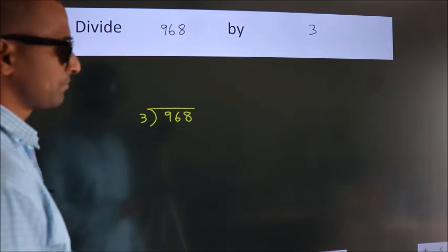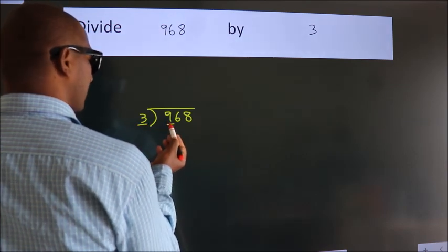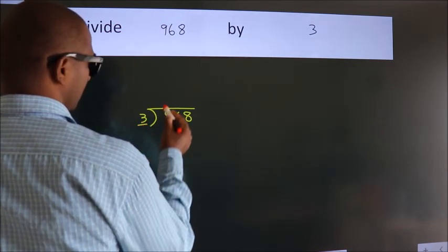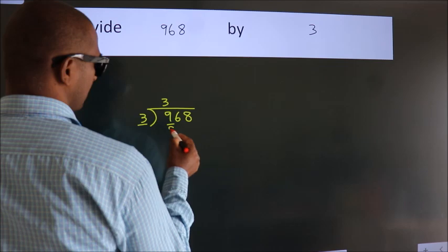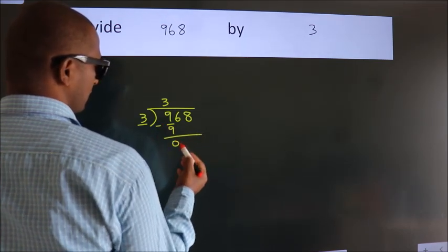Next, here we have 9, here 3. When do we get 9 in the 3 table? 3 times 3 is 9. Now we subtract. We get 0.